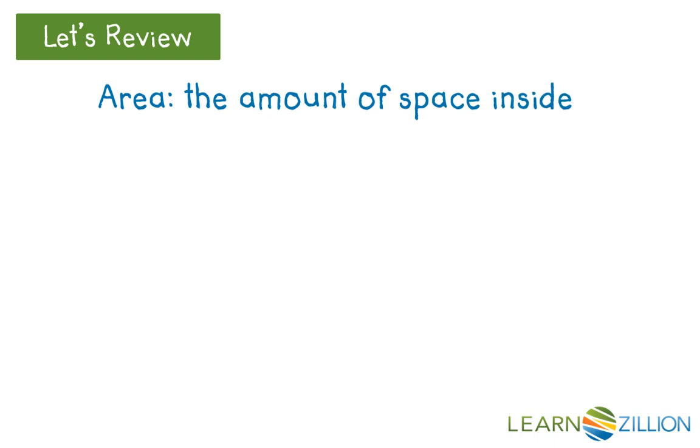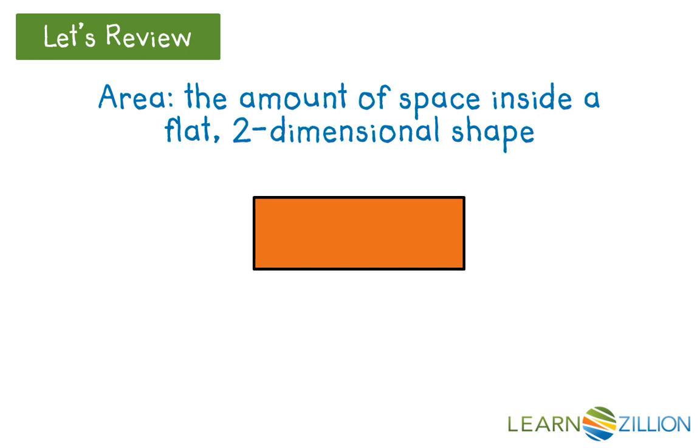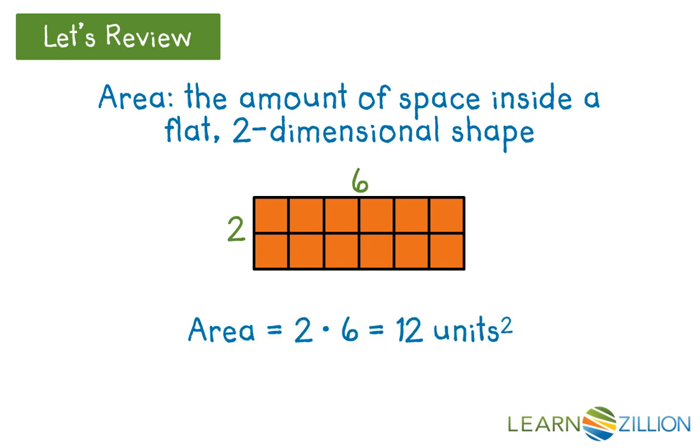Area is the amount of space inside a flat, two-dimensional shape. We measure area in square units. For example, if this rectangle measures two units by six units, we can divide the shape into squares which measure one unit by one unit. Each of these squares represents one square unit. The total area of the rectangle is 2 times 6, or 12 square units.